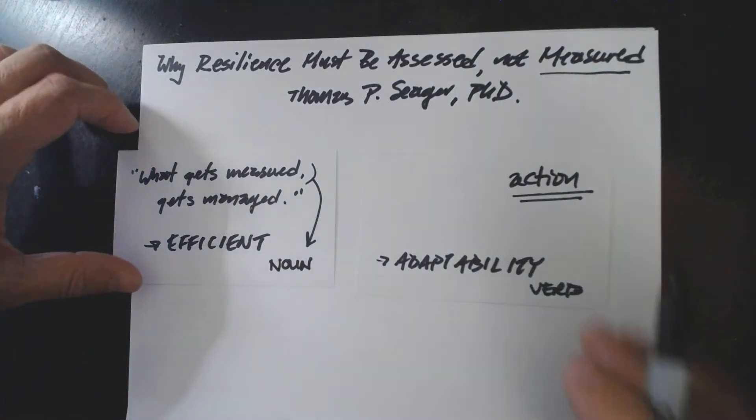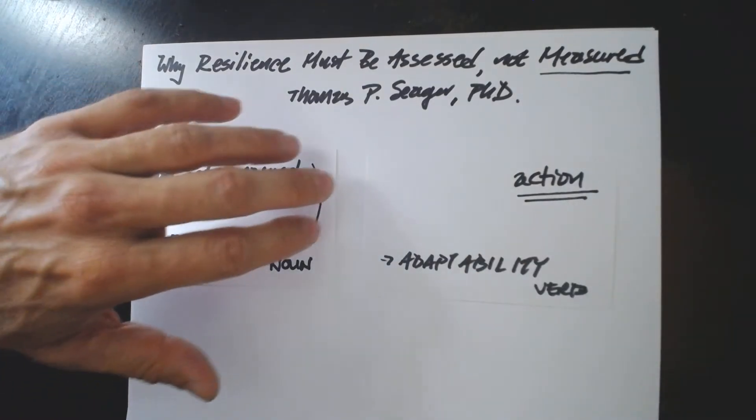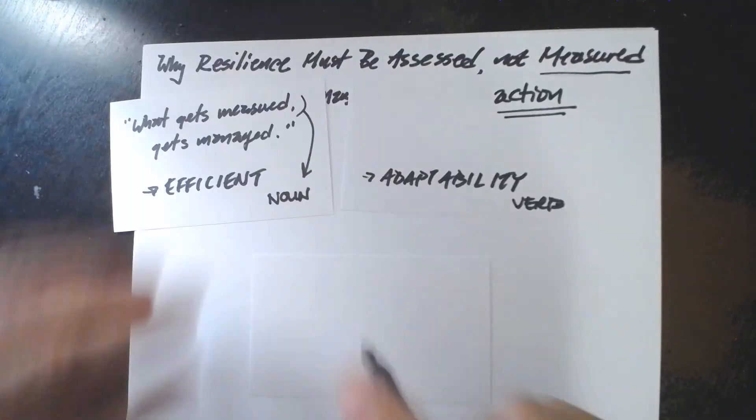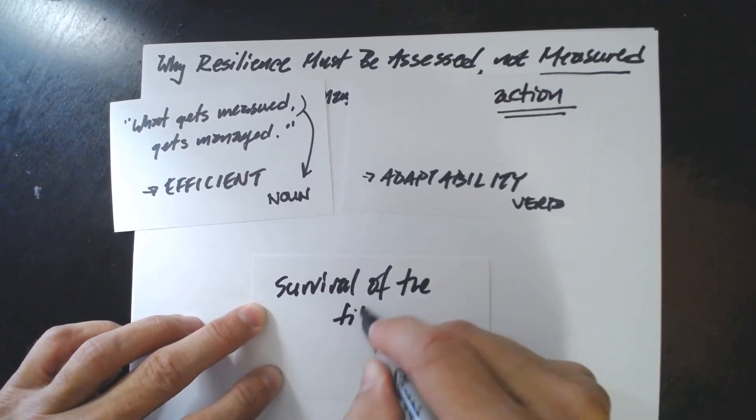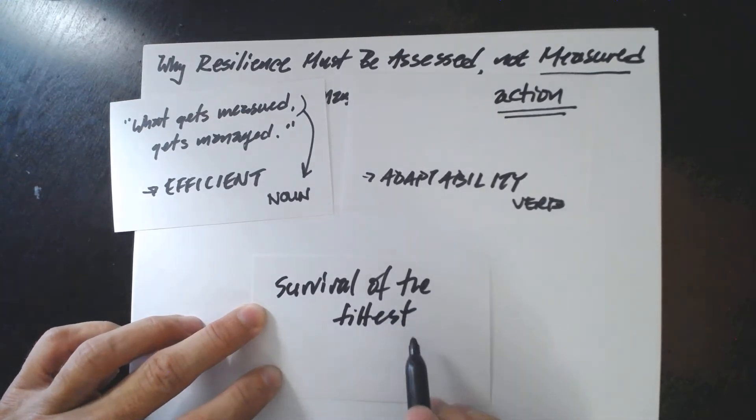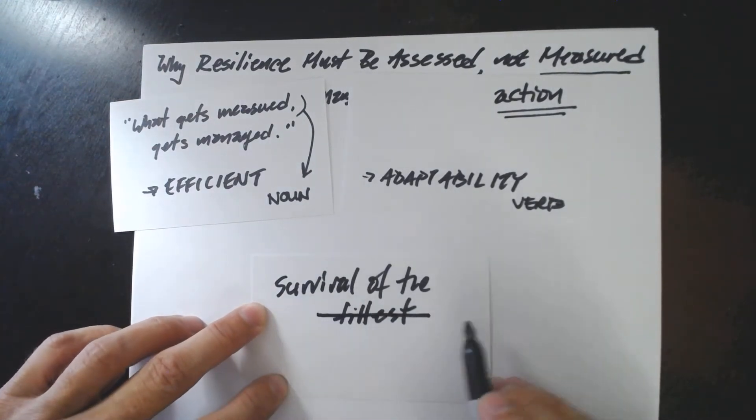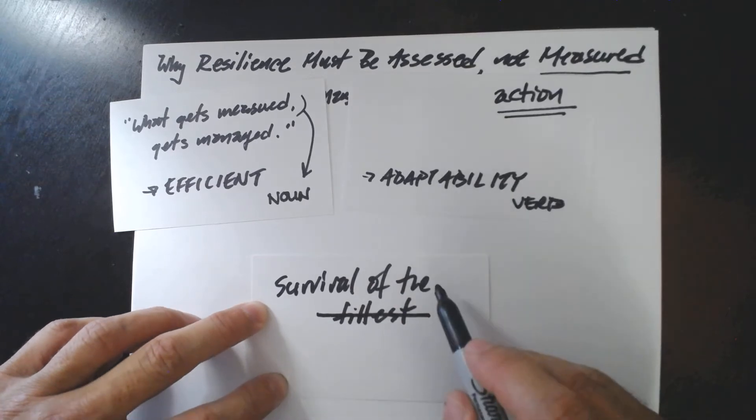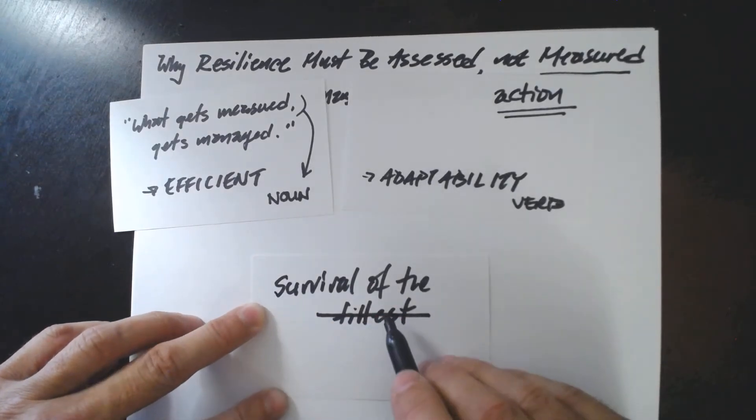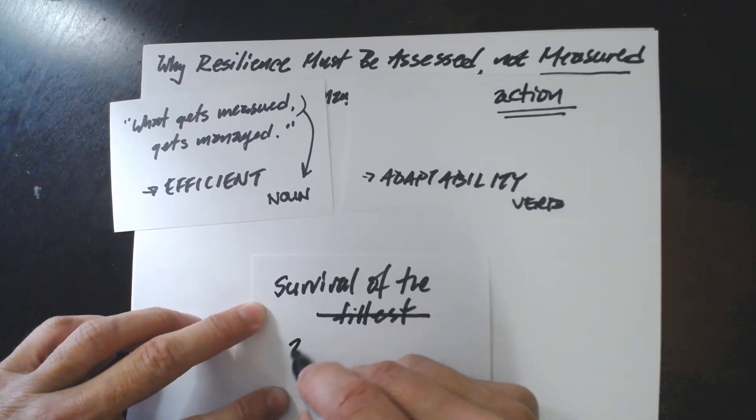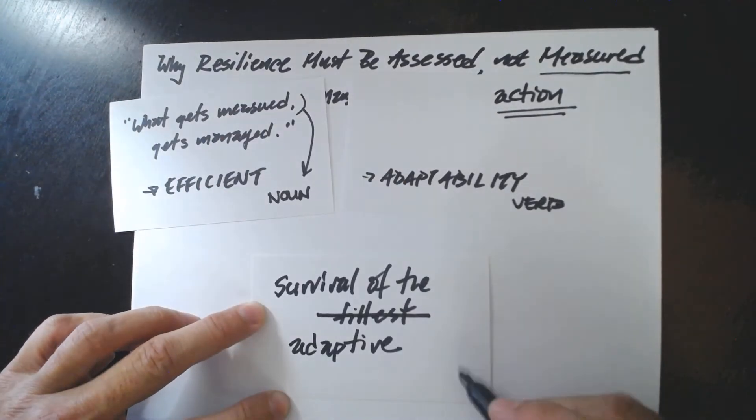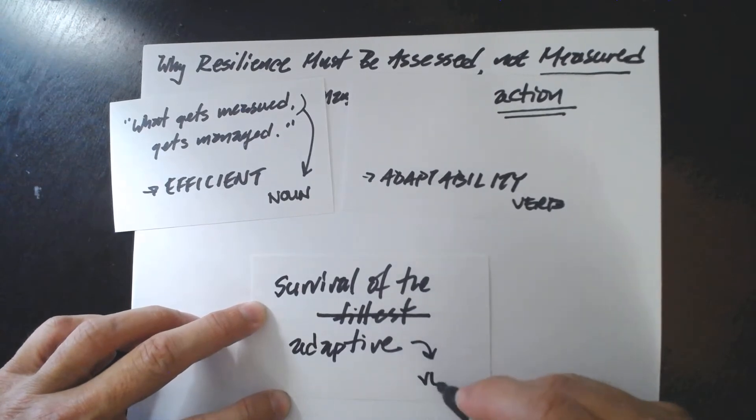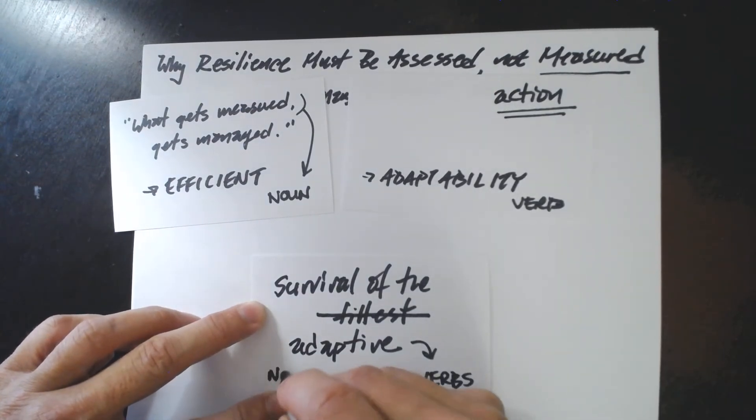There is no adaptability without action. And the difficult thing about verbs is they cannot be counted in the same way that nouns can. It's often said that Charles Darwin gave us the concept. Charles Darwin taught us survival of the fittest. But it turns out that Darwin never said that. Survival of the fittest was a contemporary of Darwin's who was paraphrasing or reviewing his book, Origin of Species. What Darwin actually said was survival of the most adaptive. Survival and resilience is about survival. Survival is found not in the nouns, but in the verbs.